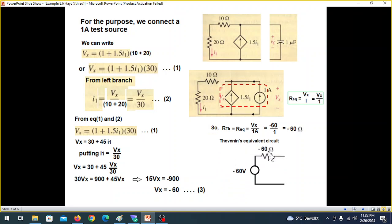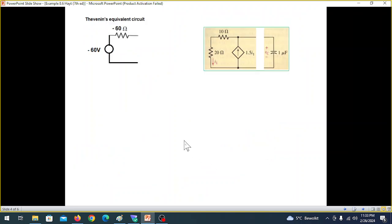So our Thevenin equivalent circuit will now look like this. This is the voltage and this is the impedance. So now we'll connect the load or the capacitor that we have separated. We're connecting the capacitor.